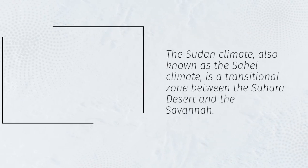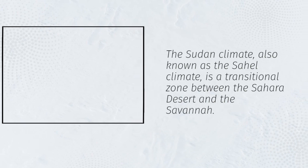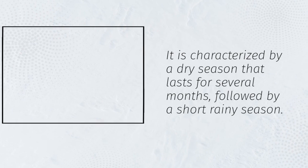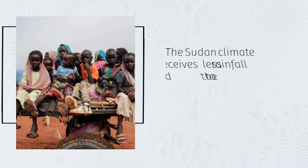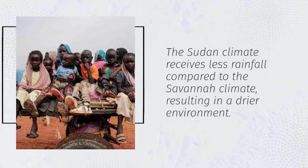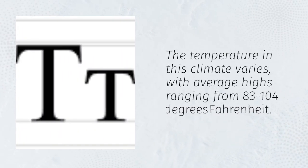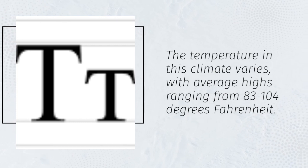The Sudan climate, also known as the Sahel climate, is a transitional zone between the Sahara Desert and the Savannah. It is characterized by a dry season that lasts for several months, followed by a short rainy season. The Sudan climate receives less rainfall compared to the Savannah climate, resulting in a drier environment. The temperature in this climate varies, with average highs ranging from 83 to 104 degrees Fahrenheit.